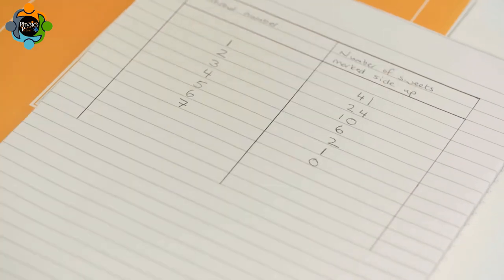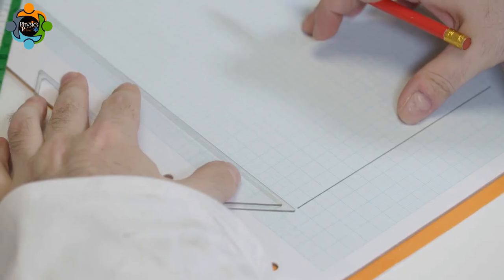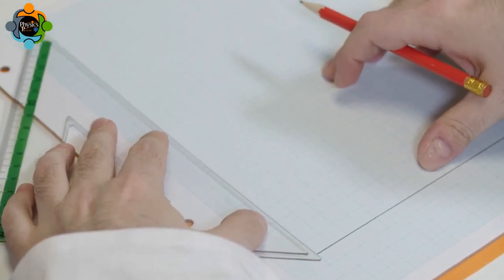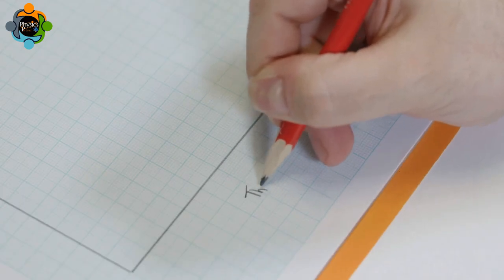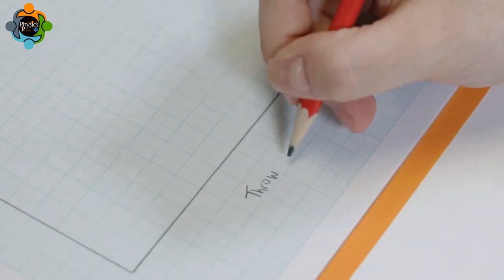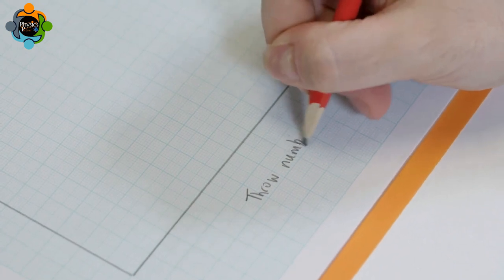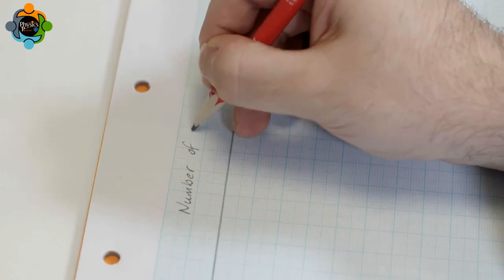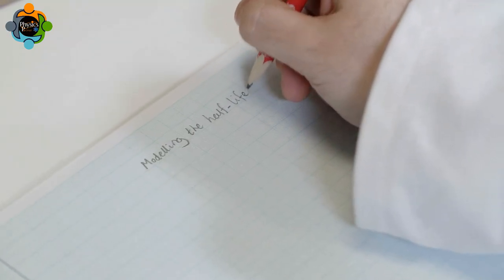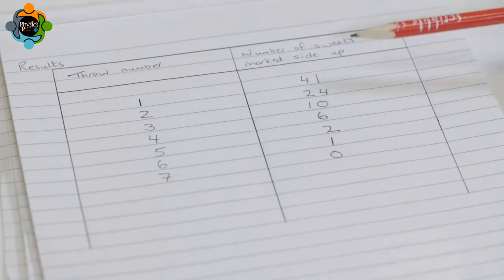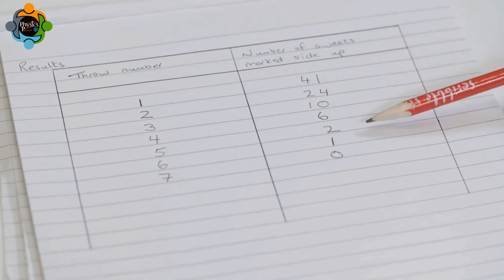Now that there is a complete set of results, they can be plotted onto a graph using a sharp pencil and a ruler. The X and Y axis of the graph are drawn. Axis labels are important. The X-axis is labeled 'throw number' and the Y-axis 'number of sweets'. The graph is given a title.